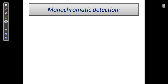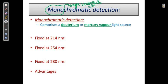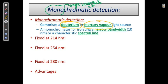What is monochromatic detection? Mono means single — single wavelength detection. The source comprises a deuterium lamp and a mercury vapor light source. A monochromator isolates a narrow bandwidth or a characteristic spectral line — a very narrow bandwidth.